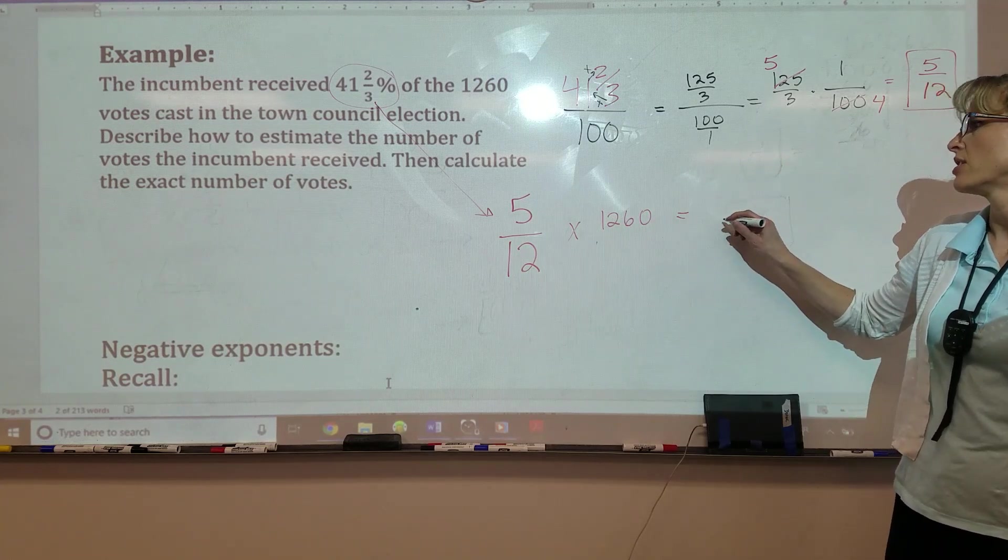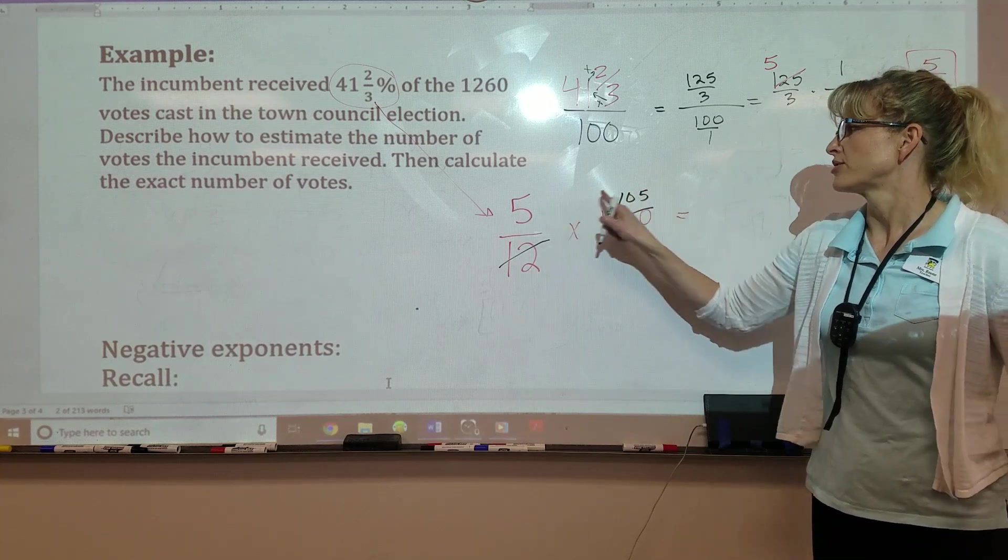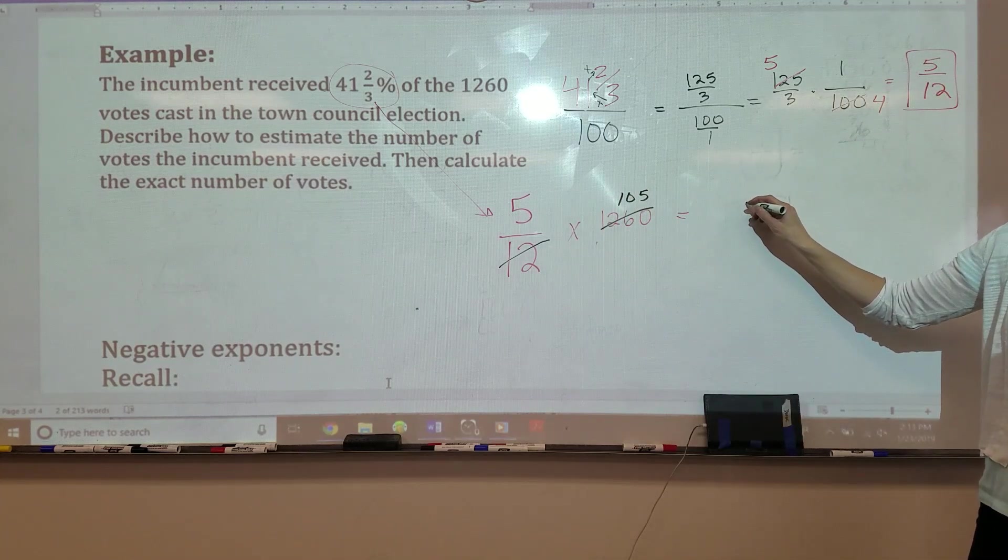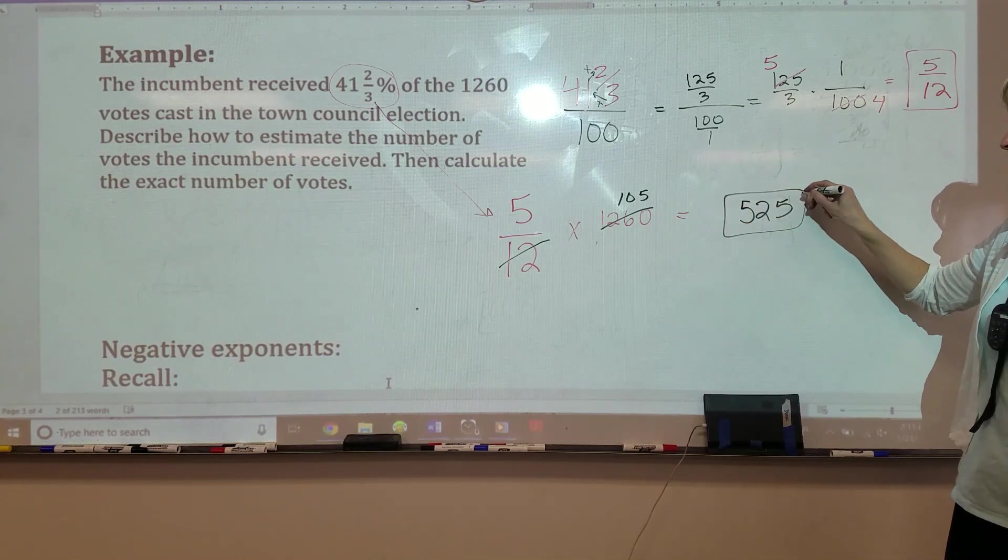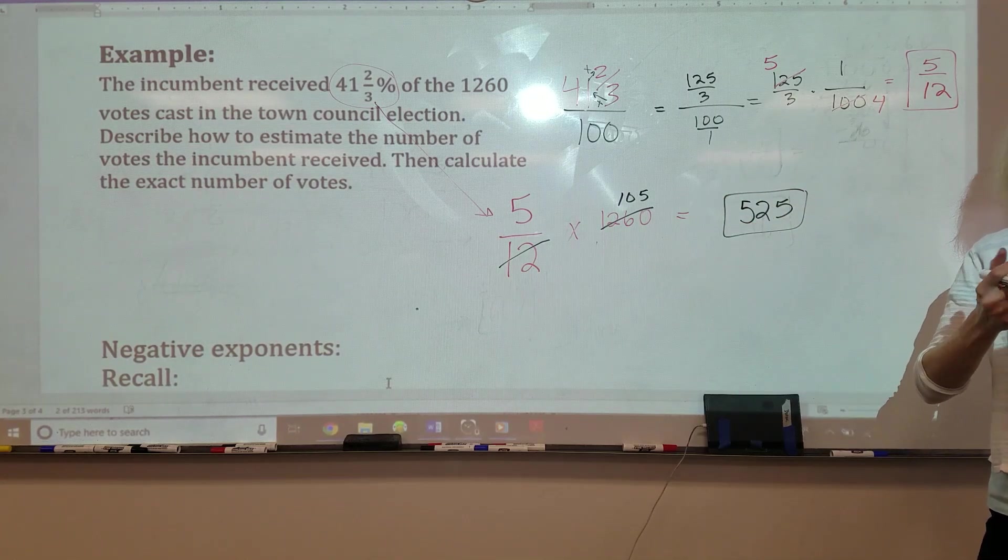So I'm going to make the space for another zero. Then I'm going to go five times. So this is going to go 105. Five times 105. 525.